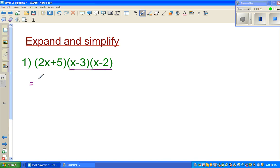So I'll write 2x plus 5 as it is. And now I'll expand using the FOIL method. First, x times x gives me x squared. Then outside, x times minus 2 is minus 2x. Then the inside, minus 3 times x is minus 3x. And last, minus 3 times minus 2 is plus 6.